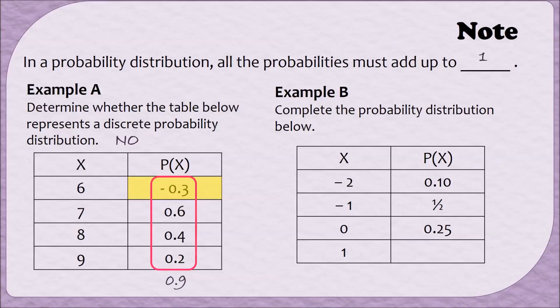To complete this probability distribution, we need to figure out what goes in that last box. Remember that all of the probabilities have to add up to 1. If I add the probabilities we have so far, I get a total of 0.85. When I subtract this amount from 1, I get 0.15. So that must mean that the probability of getting a 1 is 0.15.